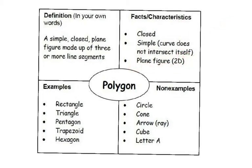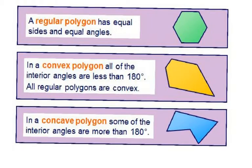Examples of polygons include rectangles, triangles, pentagons, trapezoids, and hexagons. Non-examples — things that are NOT polygons — include circles, cones, an arrow or ray, a cube, and the letter A. We also have specific types of polygons. A regular polygon is a special polygon that has equal sides and equal angles.